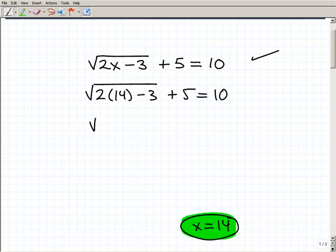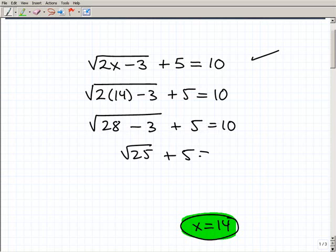Now, let's just do the work. 2 times 14 is 28. 28 minus 3 plus 5. Does this all balance out? So that 28 minus 3 is the square root of 25 plus 5. Does that equal 10? Square root of 25 is 5. 5 plus 5. Does that equal 10? Yes. 10 equals 10. That's a true statement.